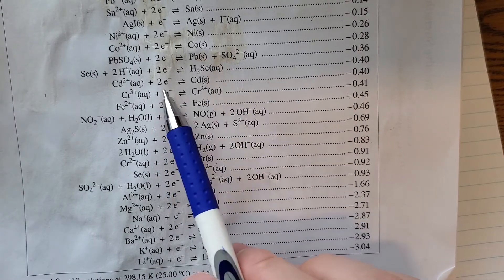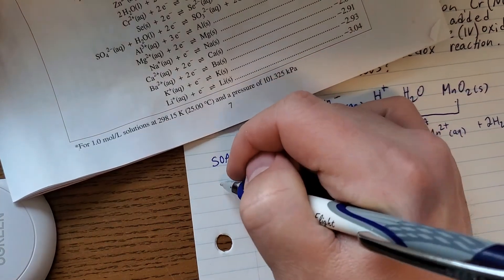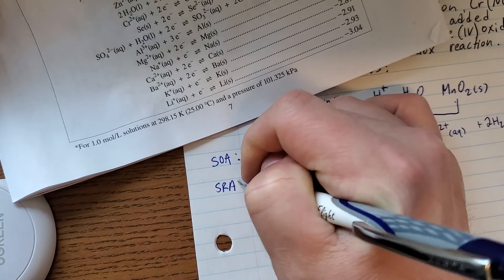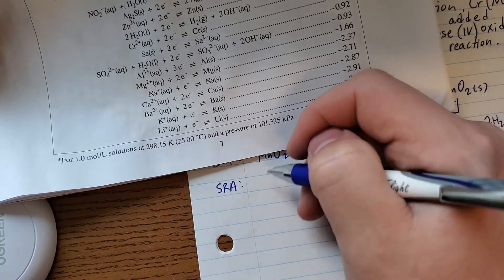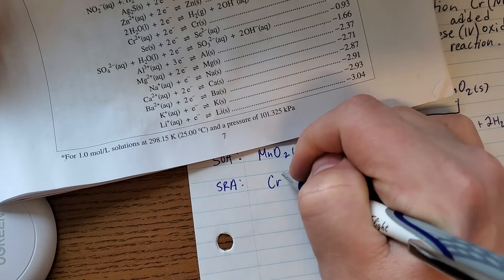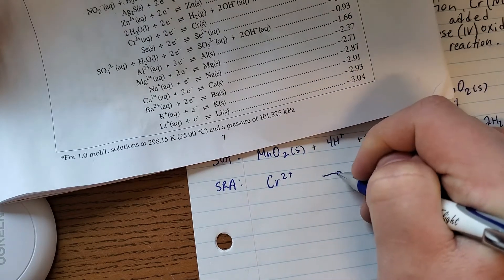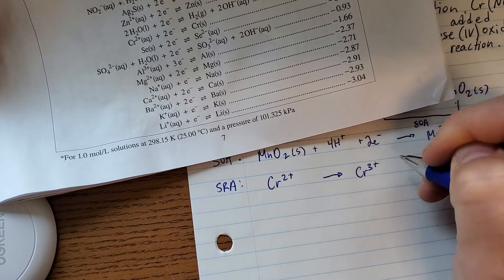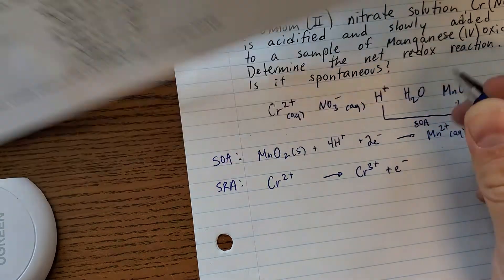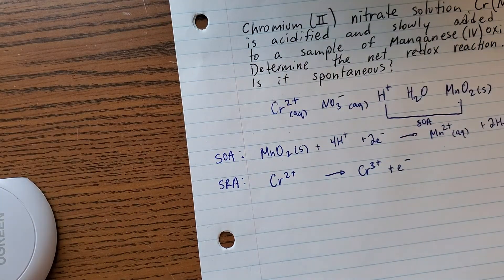This is going to be like the reactant, and these guys are going to be the product. So remember for your SRA, write the half reaction right to left, just like we did in class. So it's going to be Cr2+ becoming Cr3+ and an electron. Done with the data booklet.